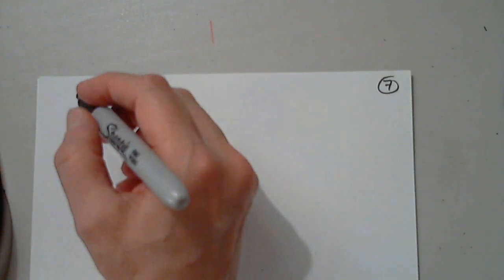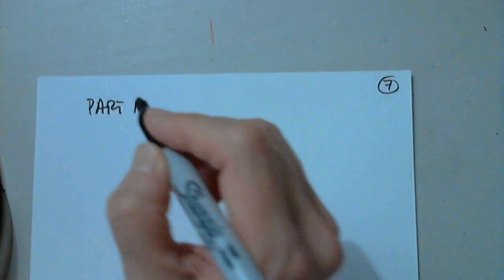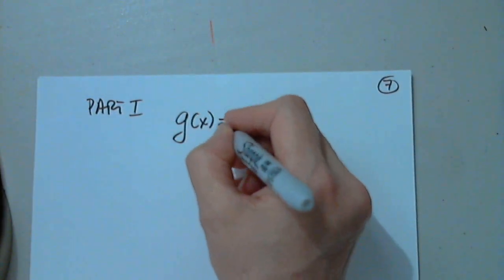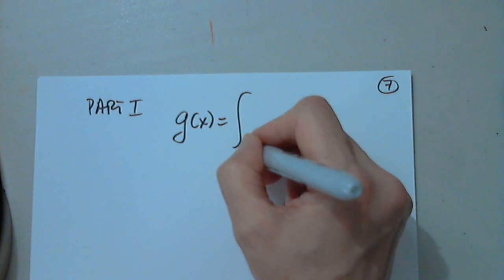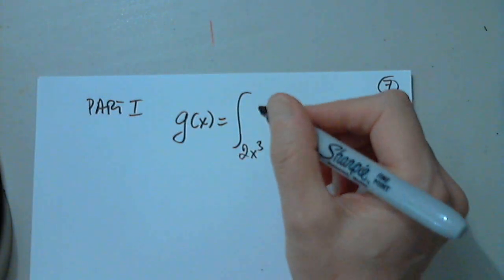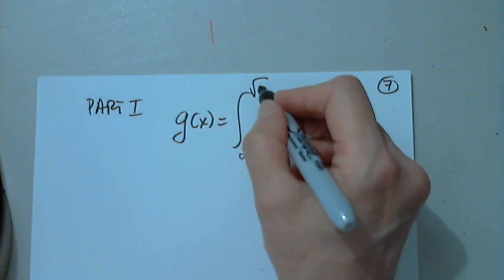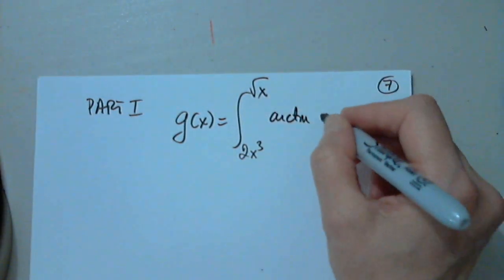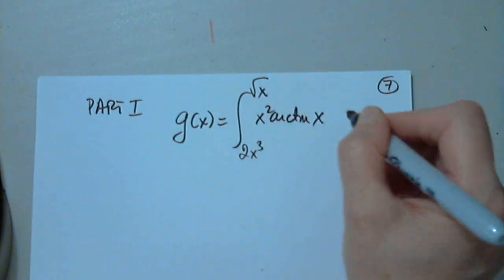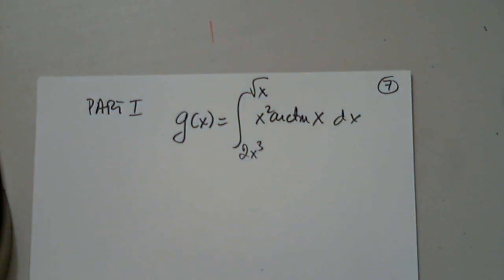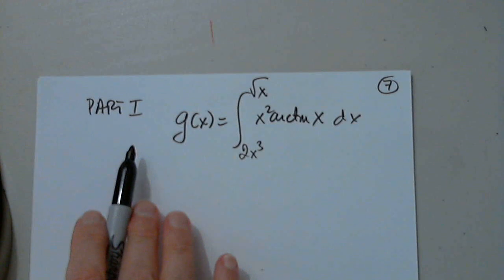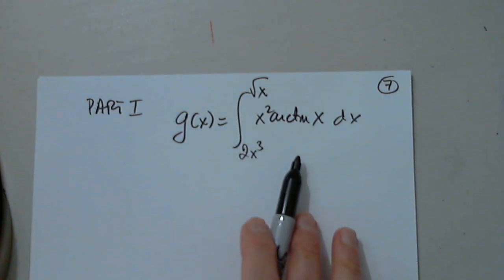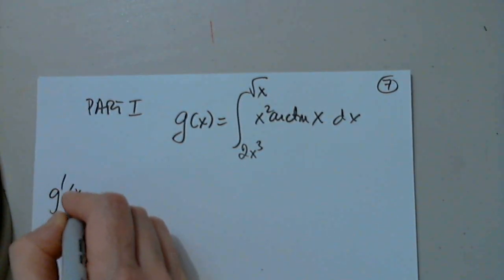Which part, or maybe it wasn't even a part, are we going to have any finding the derivative? Yes, that's what it is, so part one. So part one gives us a function, let's say g of x is the integral from 2x cubed to the square root of x from arc tangent x multiplied by x squared. So this is a function, it's given in the form of an integral. We are only asked to find g prime of x.